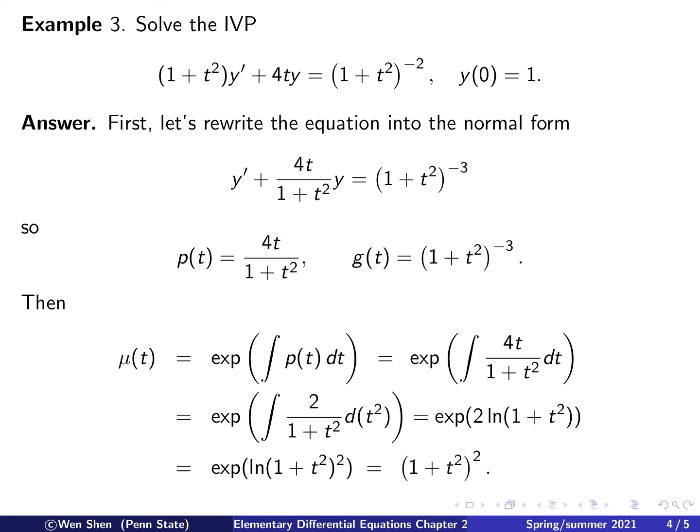We know that there are two integrals we need to carry out. The first one is the integral to compute mu, where we have to integrate p. So let's plug in p, this is the integral we need to work out. How do we compute this integral? You see there is a t squared term here and a t term here. This gives me the idea of doing substitution. Let's think t squared as a variable.